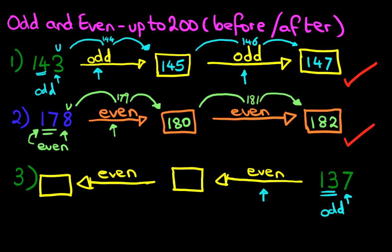Now the question is, we have to work out the even number before this. In this case, we're not going to go back in two jumps — we're just going to go back in one jump. Why is that? Well, 137 is an odd number, and because the odd and even numbers alternate one at a time — odd, even, odd, even — if 137 is odd, the number before it must be even. What comes before 137? It is 136, and that is an even number. You can check: six is an even number.